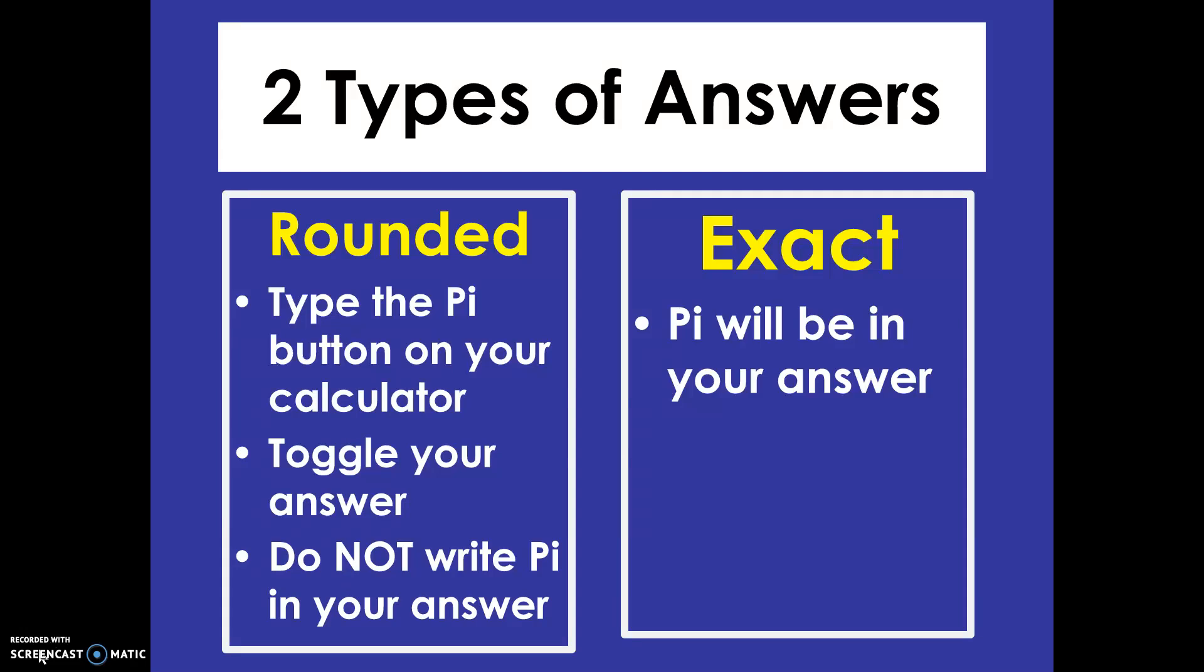Alright, and there are two types of answers that you could give me, or you could be asked for. A rounded answer, where you actually type pi or type 3.14 into your calculator. You actually just write your answer to the hundredths, to the tenths, and you don't write pi in your answer. That would be a rounded answer, actually figuring out what pi is.